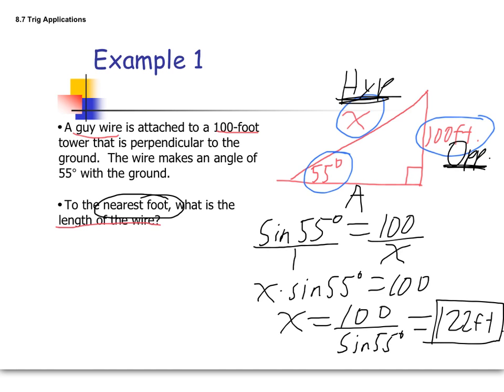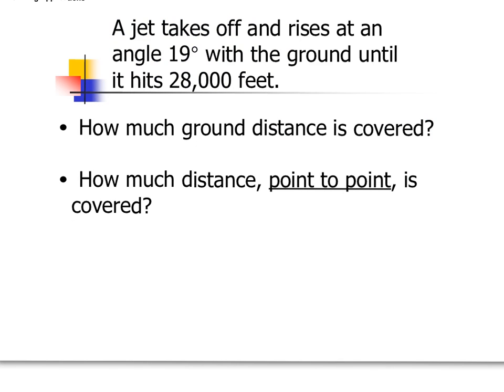I always like to check to make sure that makes sense. Well, if the tower is 100 feet, the hypotenuse should be longer than that, because 100 is a leg, hypotenuse is the longest side. 122 definitely seems to work. So there you go. All right, let's take a look at another example.